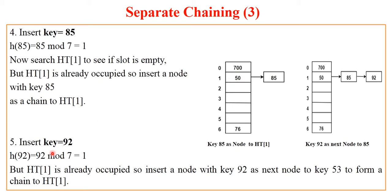Now if we try to insert 92, again its remainder is 1. As we know that the slot at hash table index 1 is occupied with 50, now we will traverse this list.